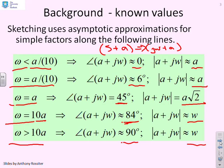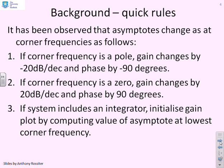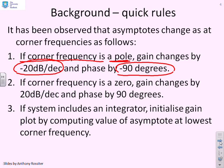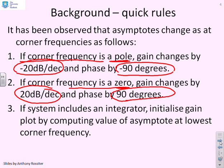In terms of sketching Bode diagrams, there are some quick rules. Going through a corner frequency that is a pole, the asymptotes in the gain plot change by minus 20 dB per decade, and the asymptotes in the phase plot change by 90 degrees. If the corner frequency is a zero, the gain plot asymptotes change by plus 20 dB per decade and the phase plot by plus 90 degrees. If the system includes an integrator, you can initialise the gain plot by computing the value of the asymptote at the lowest corner frequency.